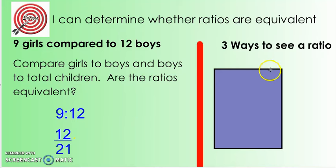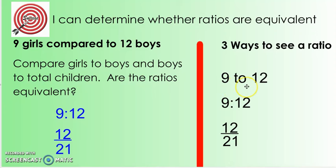Now remember, there are three different ways to write a ratio. We can write it with the words TO, we can write it with a colon, or if we're working with total number of something, then we can write it as a fraction. And so either way, we still can simplify and we can determine if they are equivalent or not.